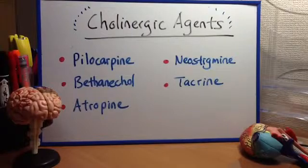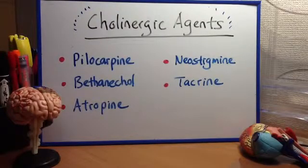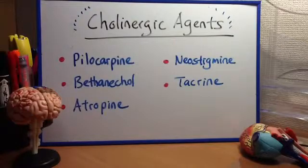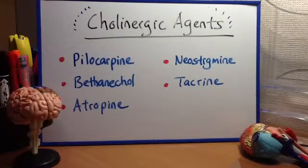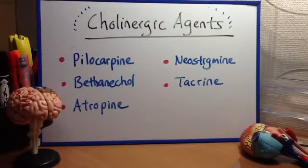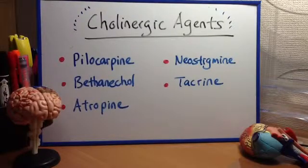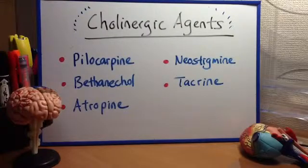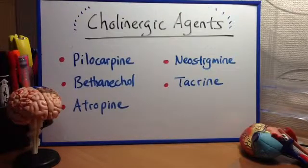Atropine is a competitive muscarinic M1, M2, M3 receptor antagonist. By blocking M2 receptors, it can cause tachycardia and mild vasodilation at high doses. By blocking M3 receptors, it can cause decreased GI tract motility, urinary retention, and cycloplegia with mydriasis. Used as an antidote for cholinesterase inhibitor poisoning — for example, from nerve gas or insecticide — and for treatment of bradycardia during cardiac emergencies. Side effects: hyperthermia. Atropine poisoning is treated with cholinesterase inhibitors, e.g., physostigmine. Scopolamine is a derivative of atropine that acts as a muscarinic antagonist, particularly at M1 receptors in the CNS, used to prevent motion sickness.